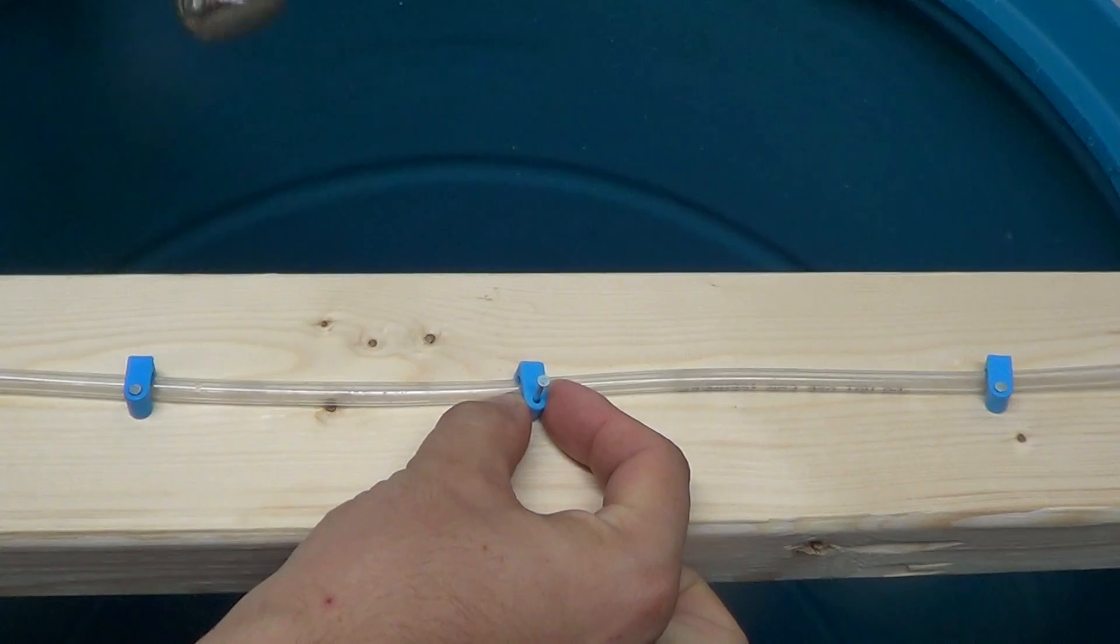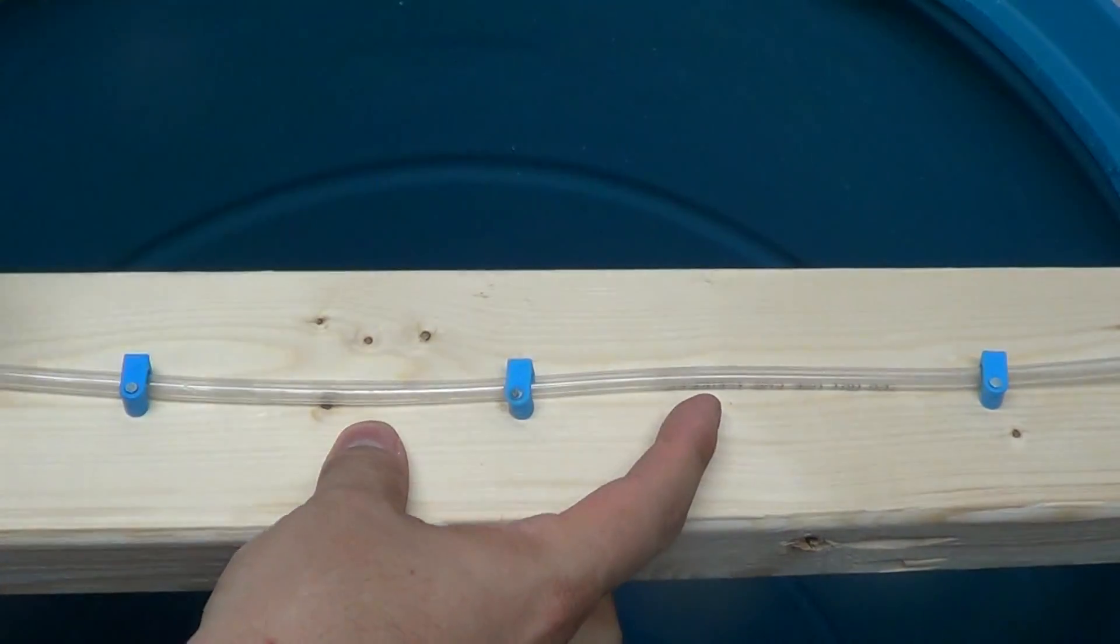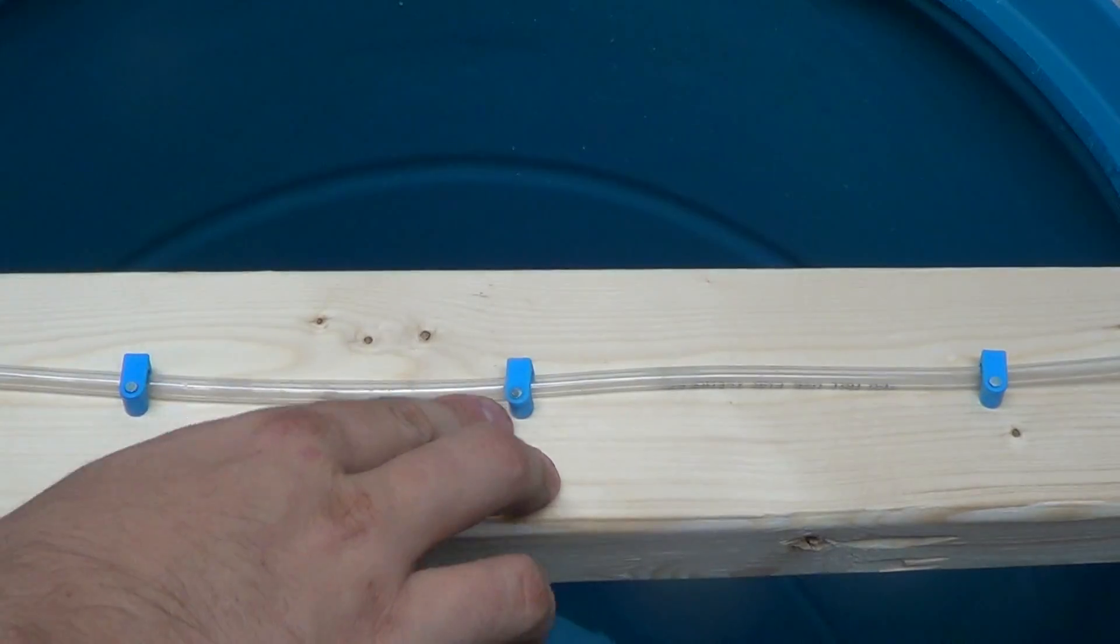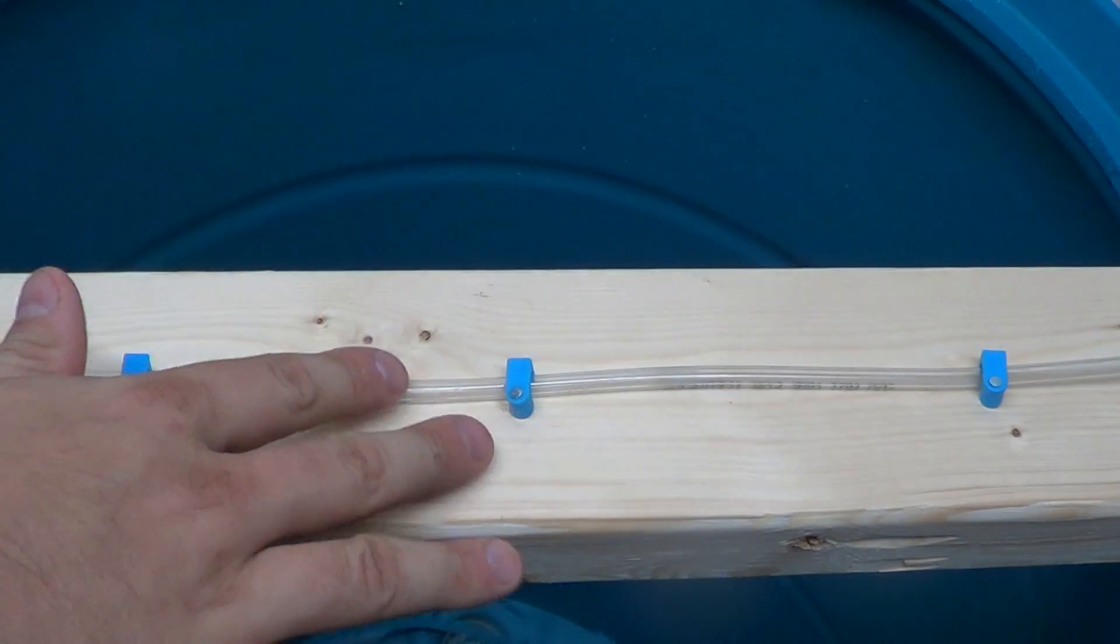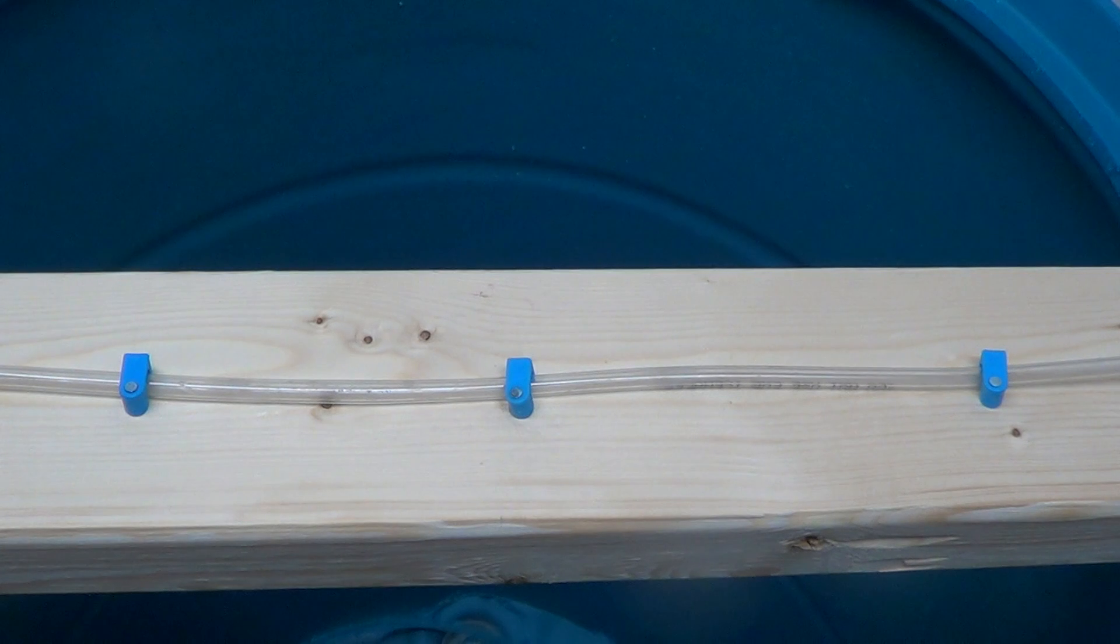So all you do is take a hammer, and with a few quick taps, you've got your nail in place. It's got a little bit of play, so it's not going to kink your hose, but it will keep it held in place.